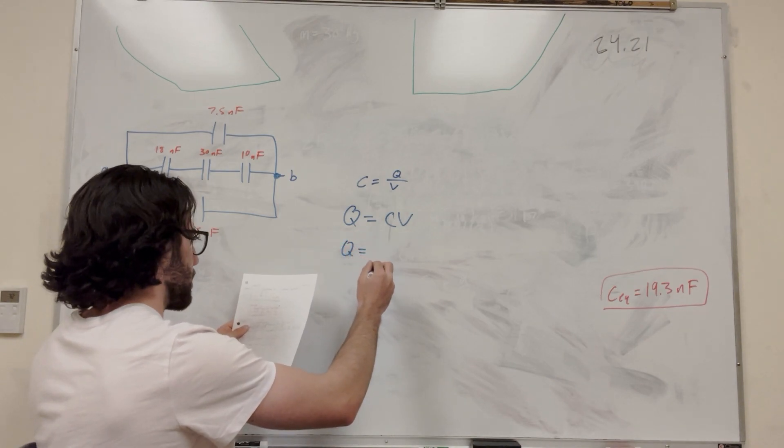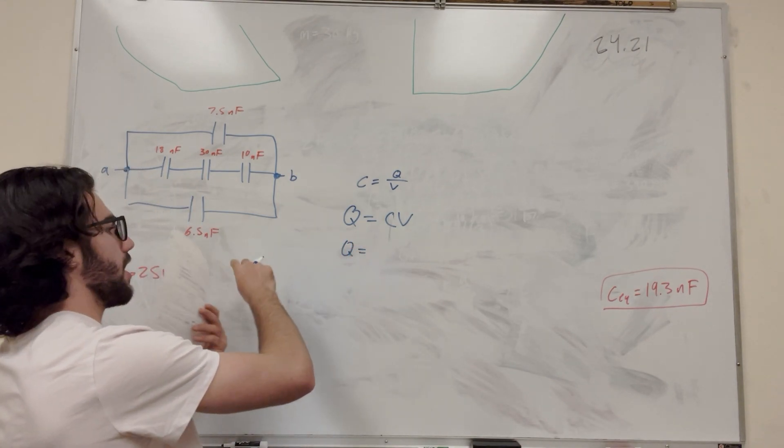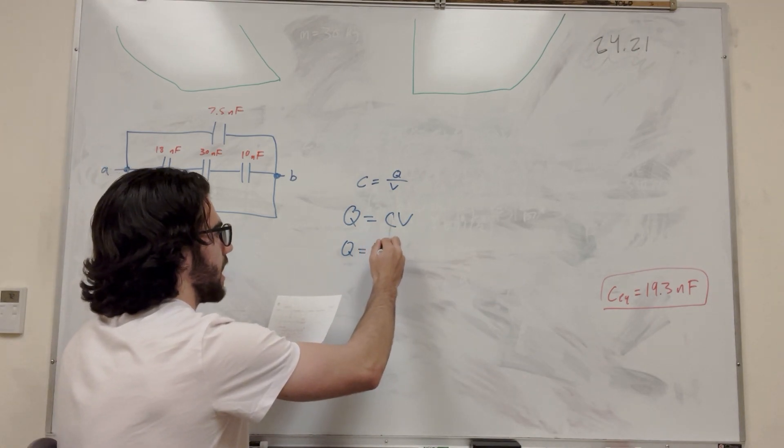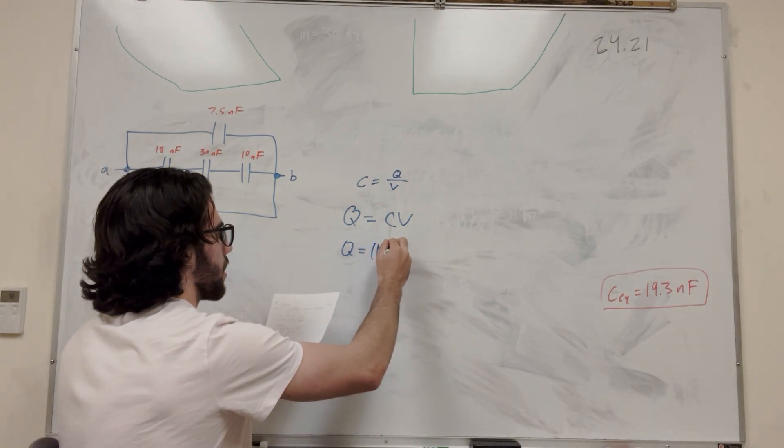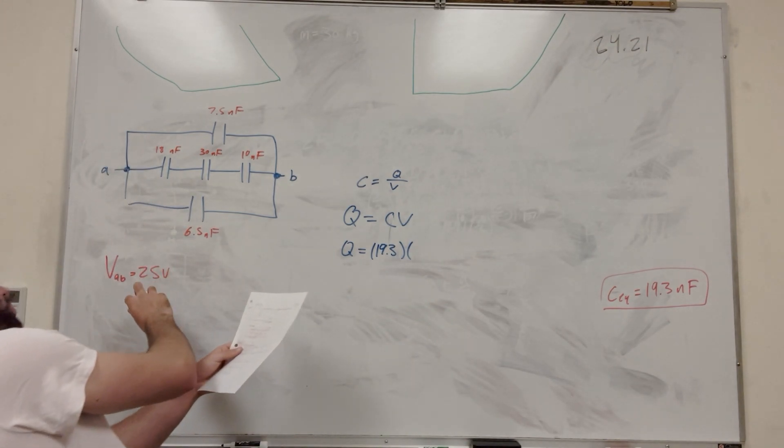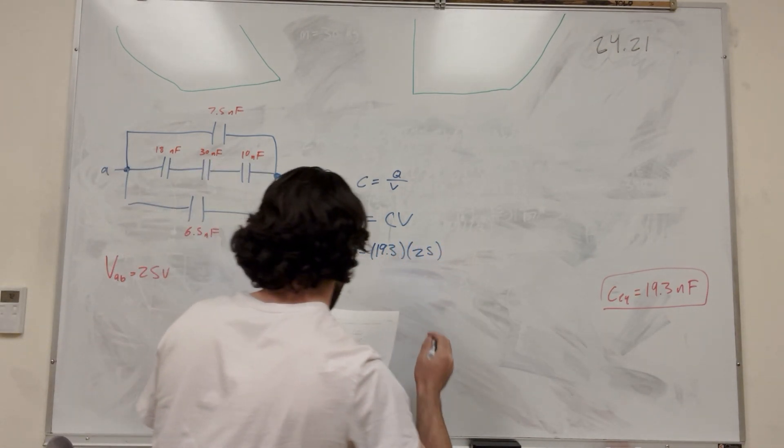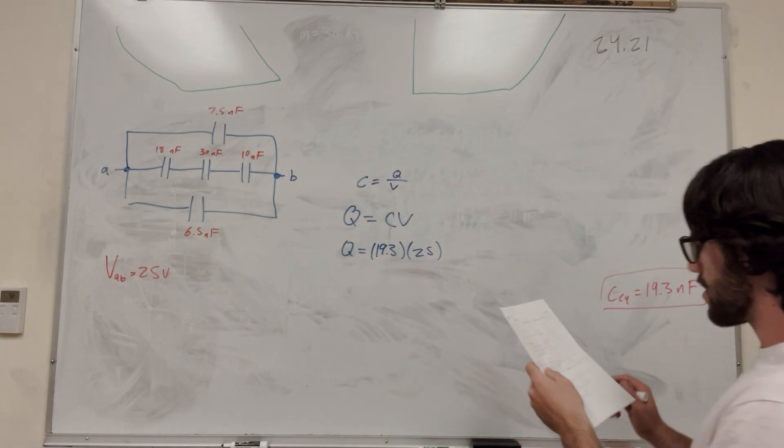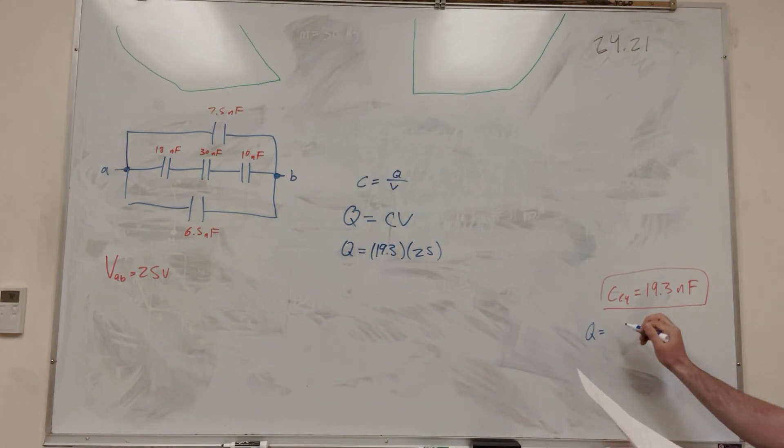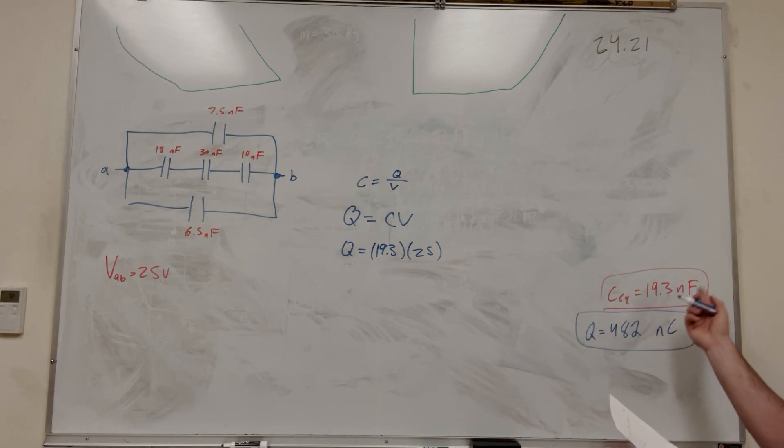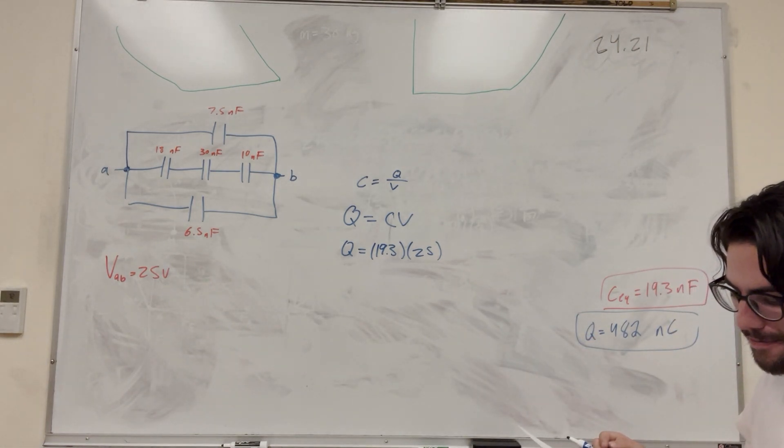So we know Q is what we're looking for, is equal to C. So for the whole system that's what we found. So it's going to be 19.3. And then our potential is what it's given to us, 25. So then if you do this, you're going to get Q is equal to 482. But this is nano, right? Nano-coulombs. Because we use nano-farads for the capacitance, so we have to consider that it's going to be all the nano.